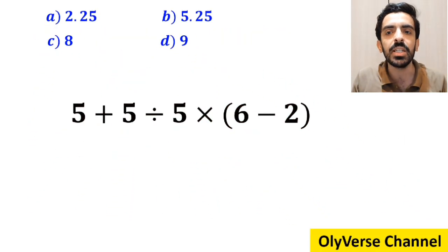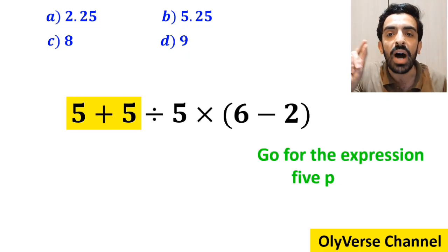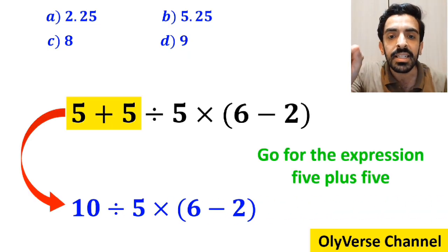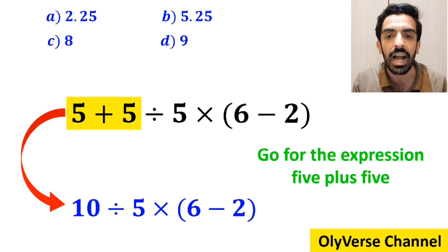Many people when solving this question first go for the expression 5 plus 5 and rewrite this expression as 10 divided by 5 then times 6 minus 2 inside the parenthesis.